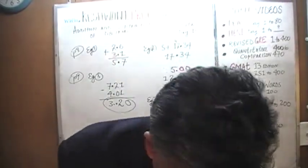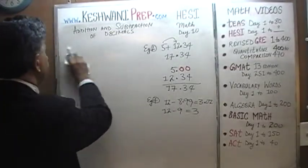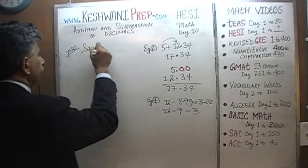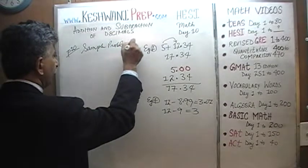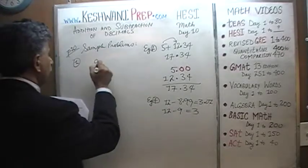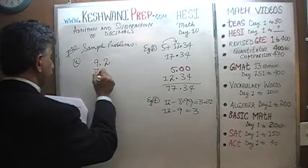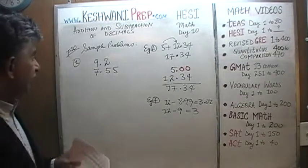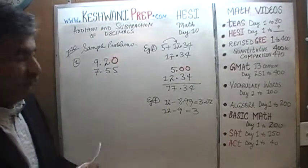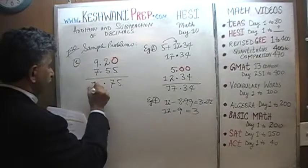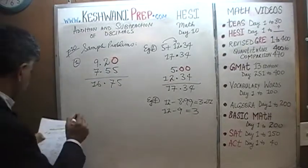Let us do some sample problems on page number 10. Number 1: 9.2 plus 7.55. Before we lose track of our decimal, place a 0 after 9.2 so it reads 9.20 — it is easier to see. Now: 0 plus 5 is 5, 2 plus 5 is 7, and 9 plus 7 is 16. Very simple, very straightforward.